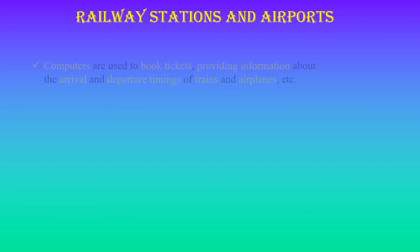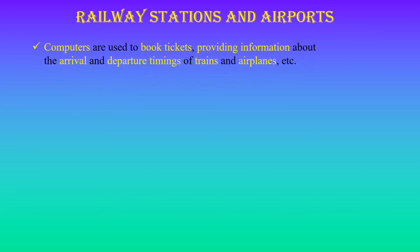Our next topic is railway stations and airports. Computers are used to book tickets, providing information about the arrival and departure timings of trains and airplanes, etc.